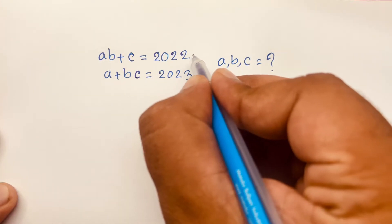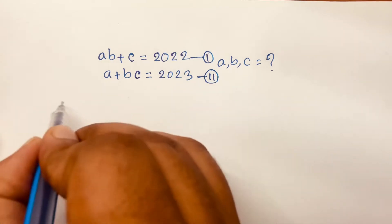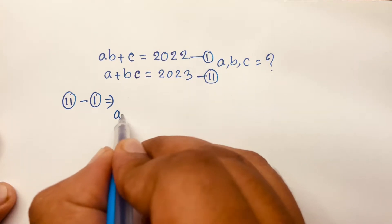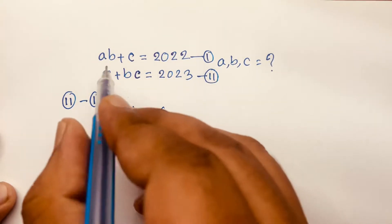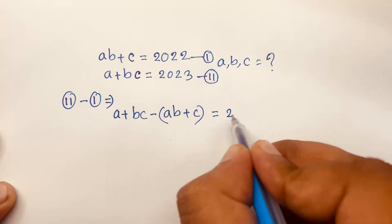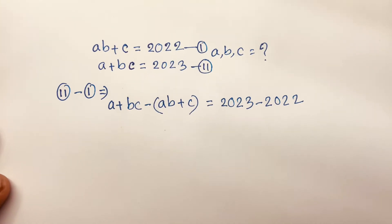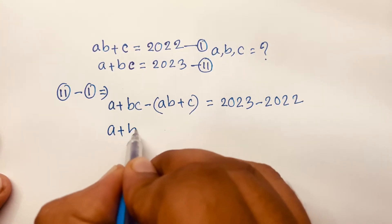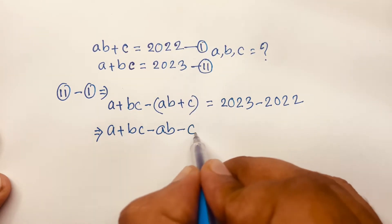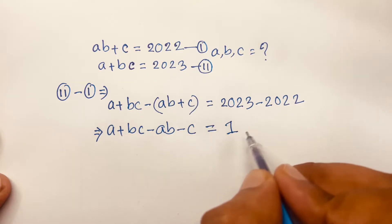So this is our first equation and this is our second equation. I subtract the second equation minus the first equation. So it will be A^(BC) minus A^(B+C) is equal to 2023 minus 2022, which equals 1.